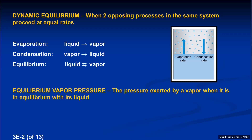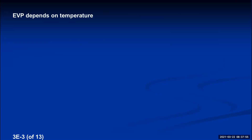Equilibrium vapor pressure depends upon one important factor: temperature. If we warm the liquid water, we give all liquid molecules more energy, causing more surface molecules to acquire enough kinetic energy to escape. The evaporation rate increases, the system is no longer in equilibrium, and more vapor builds up until a new equilibrium is established — with more vapor and a higher equilibrium vapor pressure. So equilibrium vapor pressure, abbreviated EVP, depends upon temperature. At 10°C, EVP is 9 torr; at 20°C it is higher, and it continues to rise with temperature.